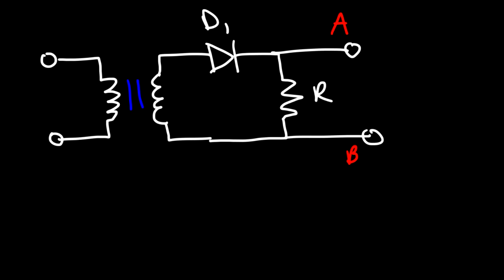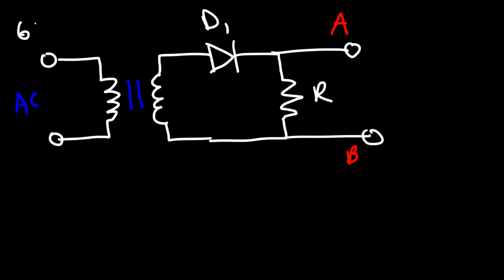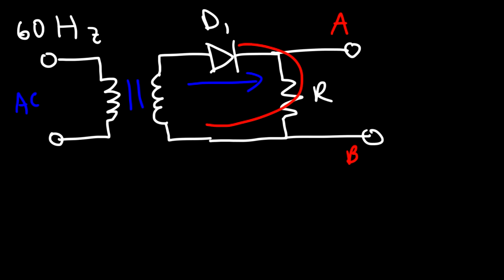So what's going to happen in this circuit? At the input, we have typically an AC wave. Current can flow in this direction, and then it's going to reverse and flow in the other direction. In the U.S., the frequency is typically 60 Hz, which means that the current changes 60 times every second. Once we generate an AC wave at the output of the transformer, current will only flow in one direction — when it tries to flow in the other direction, the diode will block it. So the diode will allow current to flow in one direction. Thus, you can use a diode for a half-wave rectifier.